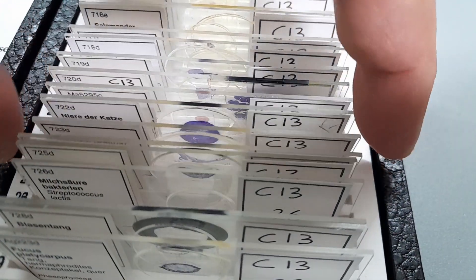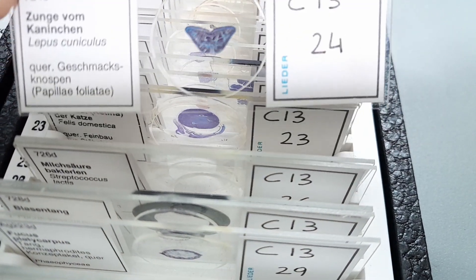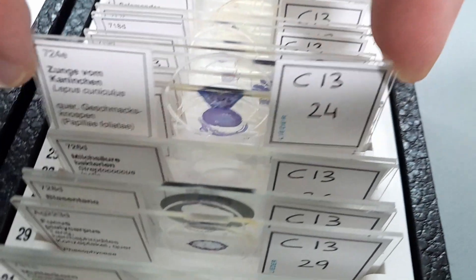I have a slide box with 50 slides, a nice little assortment of cross sections of plant and animal tissues and some whole mounts of insects. They had a possibility to look directly through the microscope, but I also had a little monitor next to it so we could watch the things together on the screen as well.